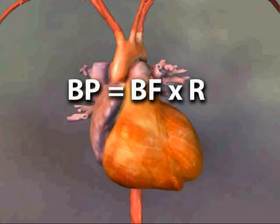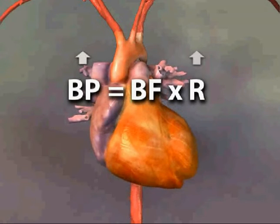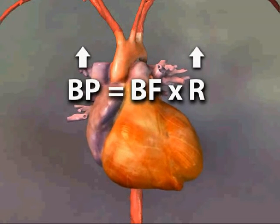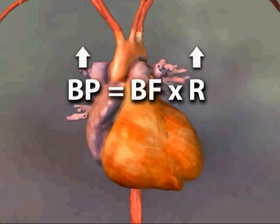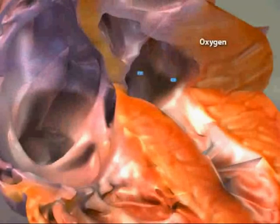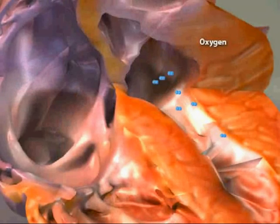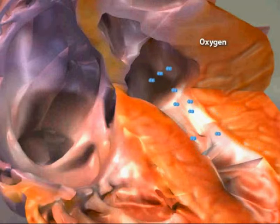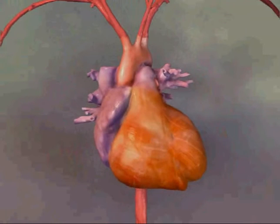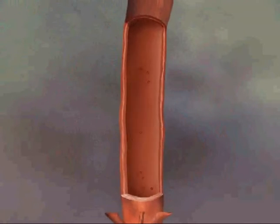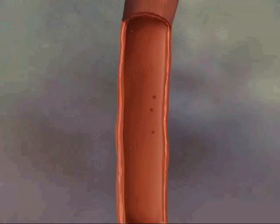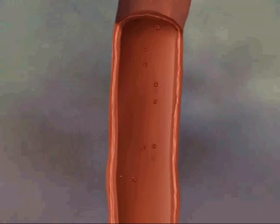To pump more blood or against higher resistance, the heart then requires more oxygen and is more susceptible to angina or a heart attack. Second, arteries and arterioles can be damaged.